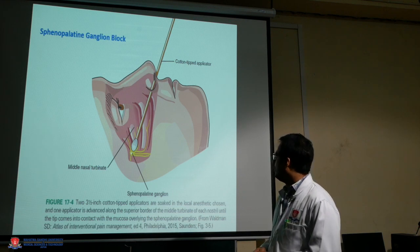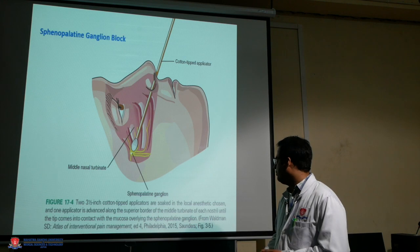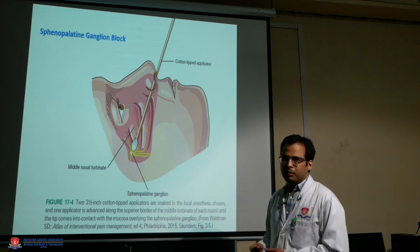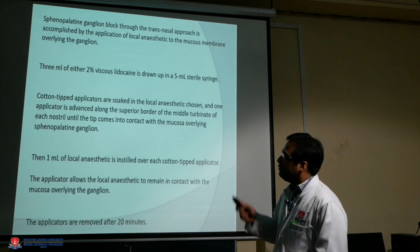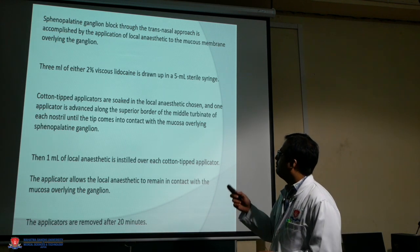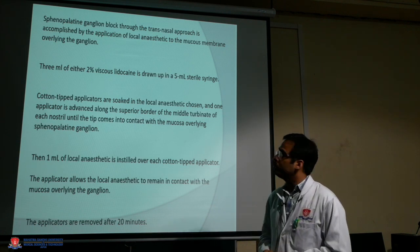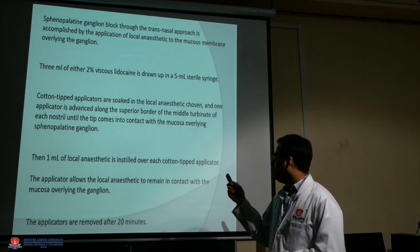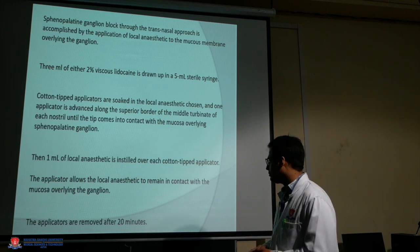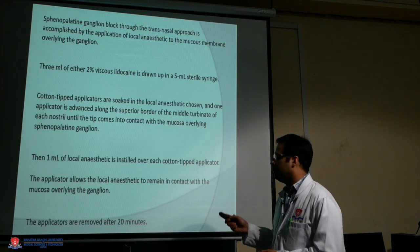We are also performing sphenopalatine ganglion block for management of head and neck facial pain in cancer patients. Using a transnasal approach, three-and-a-half-inch cotton tip applicators soaked in local anesthetic are advanced along the superior border of the middle turbinate of each nostril until the tip comes in contact with the mucosa overlying the sphenopalatine ganglion. Three ml of 2% viscous lidocaine is used in a 5 ml syringe. One ml of local anesthetic is instilled over the cotton tip applicator, which keeps the anesthetic in contact with the mucosa. The applicators are removed after 20 minutes.